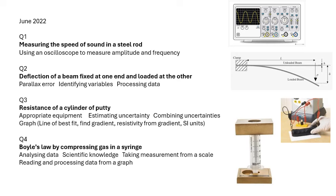Using an oscilloscope to measure amplitude and to measure frequency. Question two was about a cantilever, which is like a beam which is supported at one end and you're loaded at that end and you measure the deflection. There was parallax error involved, identifying variables, processing the data, working stuff out, proving a relationship. I think you have to work out Young's modulus from the data.